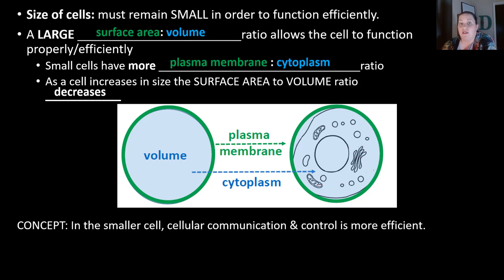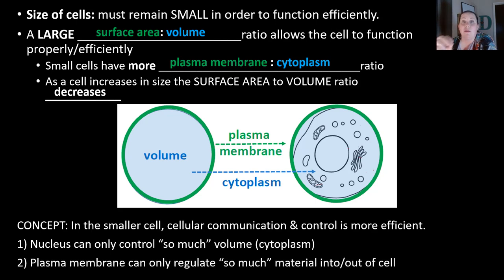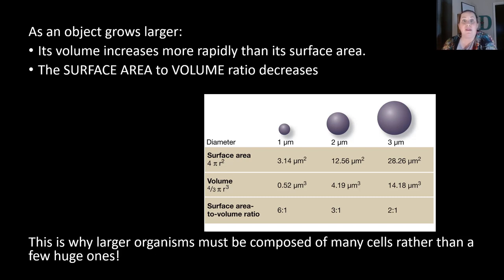In smaller cells, cellular communication and control is more effective than if the cell is larger, because the nucleus can only control so much volume. It's kind of like if you were put in charge of kindergartners — you can only control so many. The nucleus can only control so much, and the plasma membrane can only regulate so much material going in and out of it. As an object grows larger, its volume increases more rapidly than its surface area, so the surface area to volume ratio decreases. The smaller ball has a six to one ratio, whereas the larger one has only a two to one ratio.